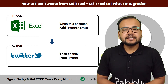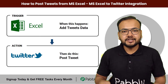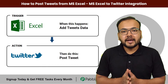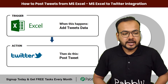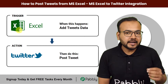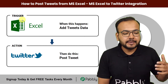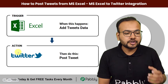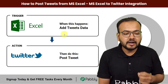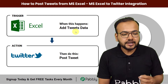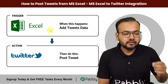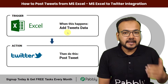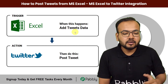In this video you will see how you can post a tweet on Twitter directly and automatically from your Microsoft Excel sheet. We are going to connect Microsoft Excel as a trigger application and Twitter as the action application of our automation workflow. You just have to add the details of the tweets in a row in your Microsoft Excel worksheet and after every eight hours the data will be posted as tweets.